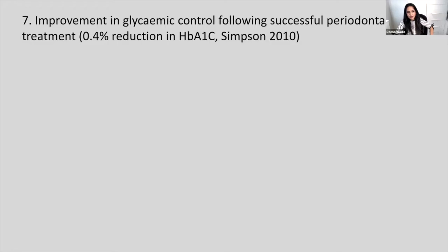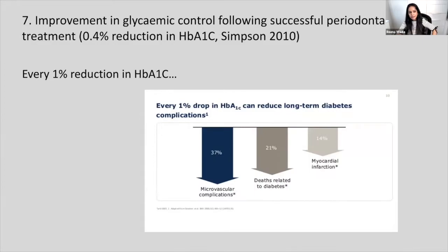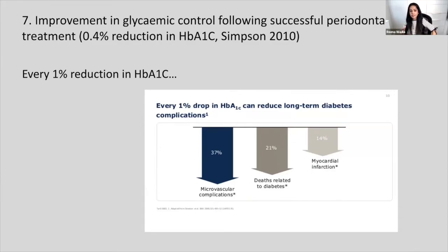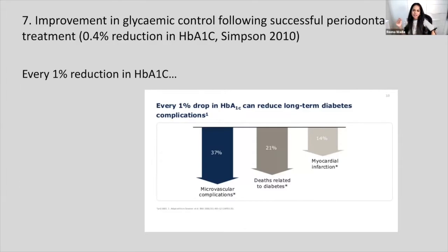A really interesting stat: if you do good gum treatment, you can improve HbA1c by 0.4%. Even a 1% reduction reduces diabetes deaths by 21%. A better way to explain this to patients is: 'If we get your gums under control, it's equivalent to your GP adding a diabetes drug to your regime — it's a bit like saying, if you get the gums under control, you might not need that metformin.' This kind of information really motivates patients.